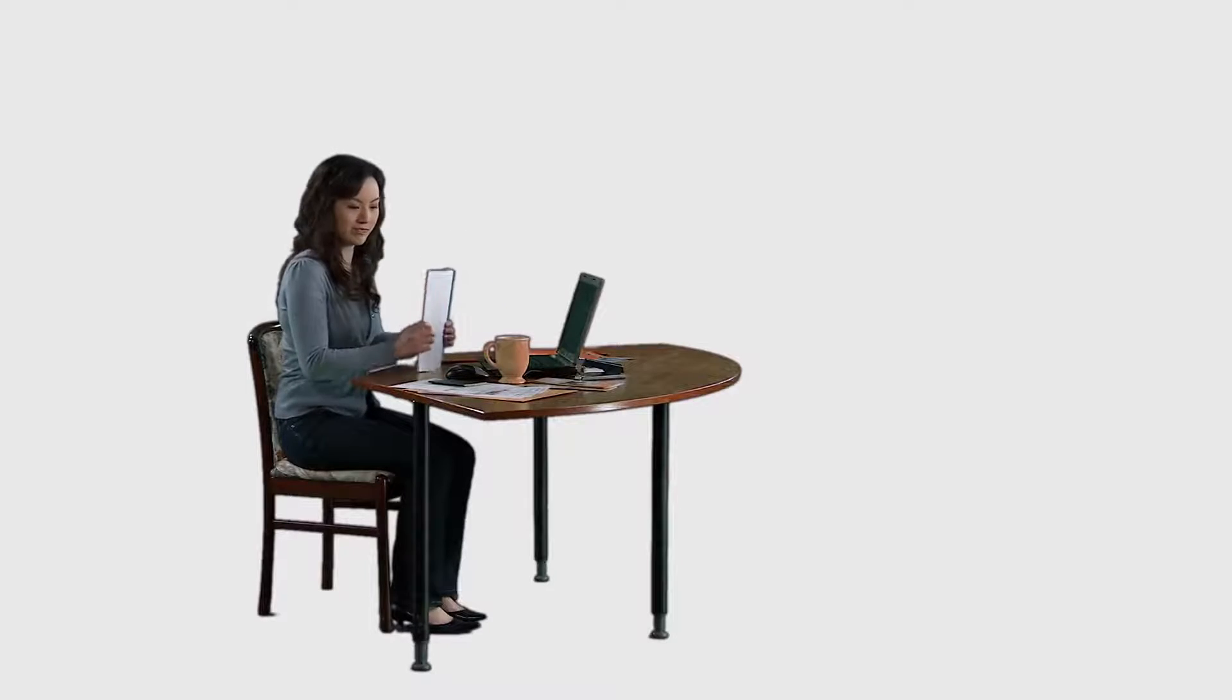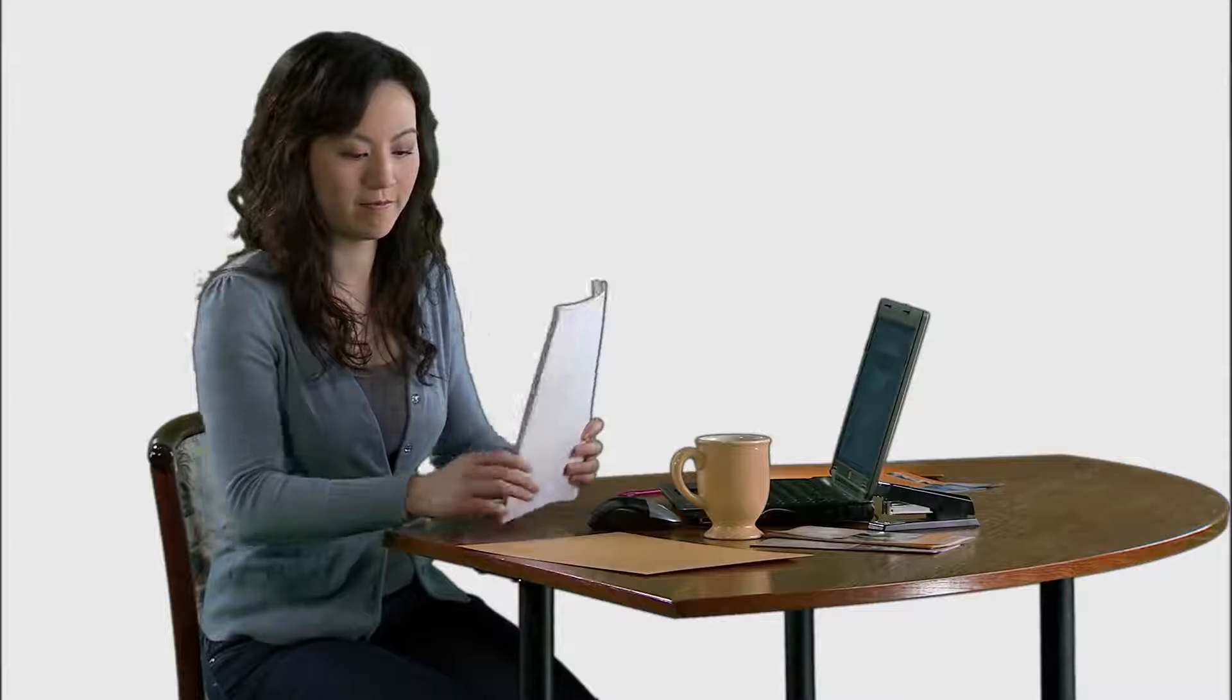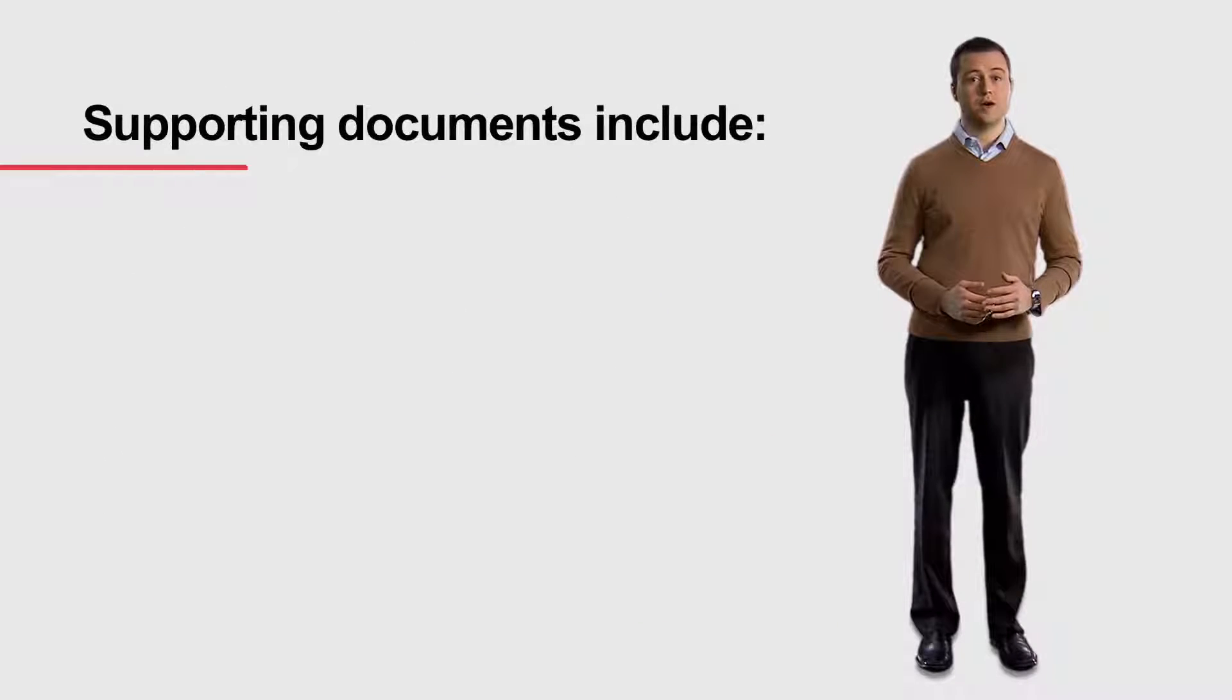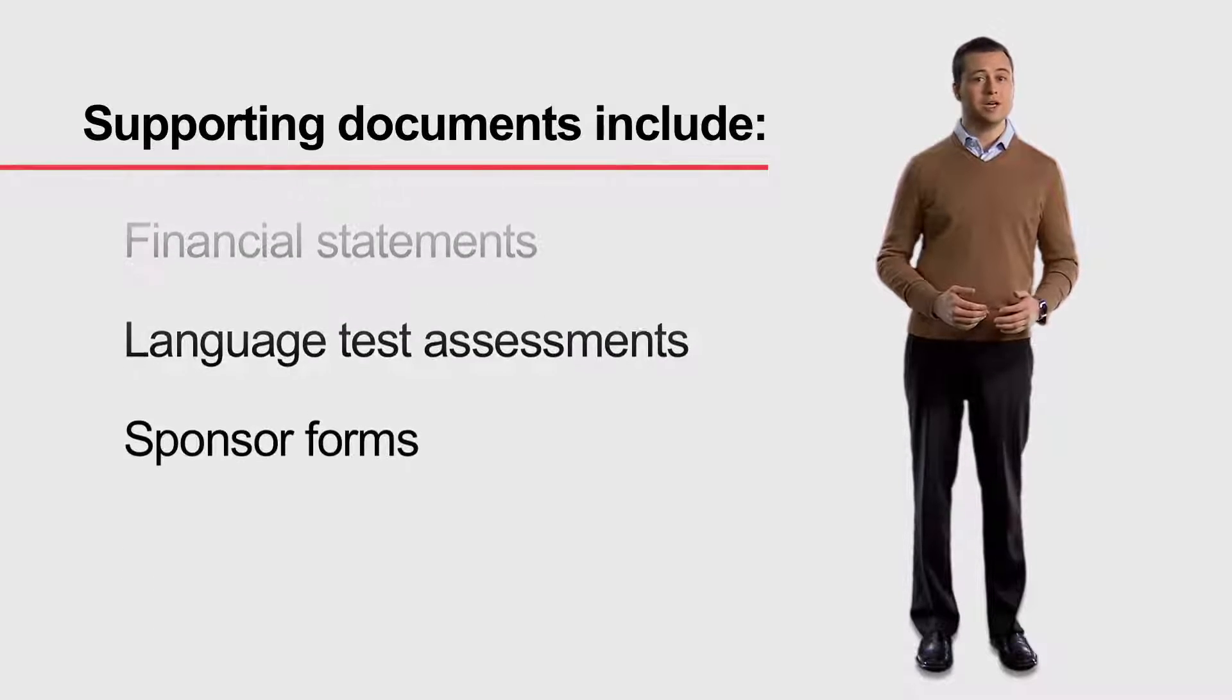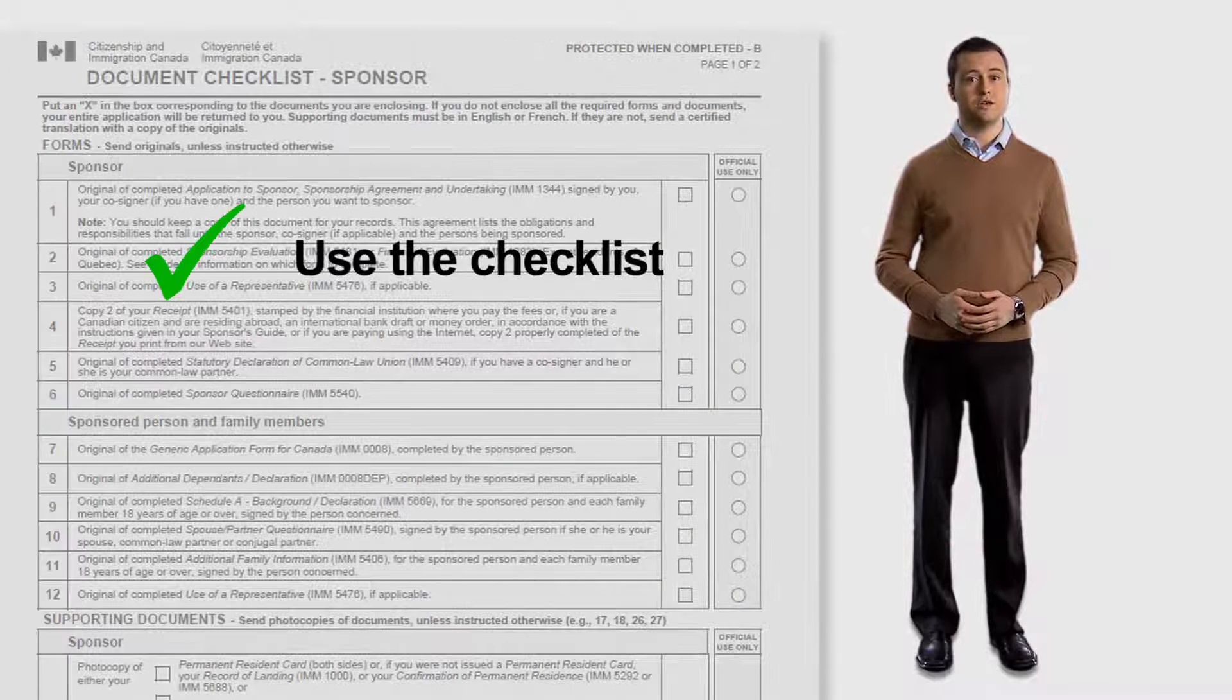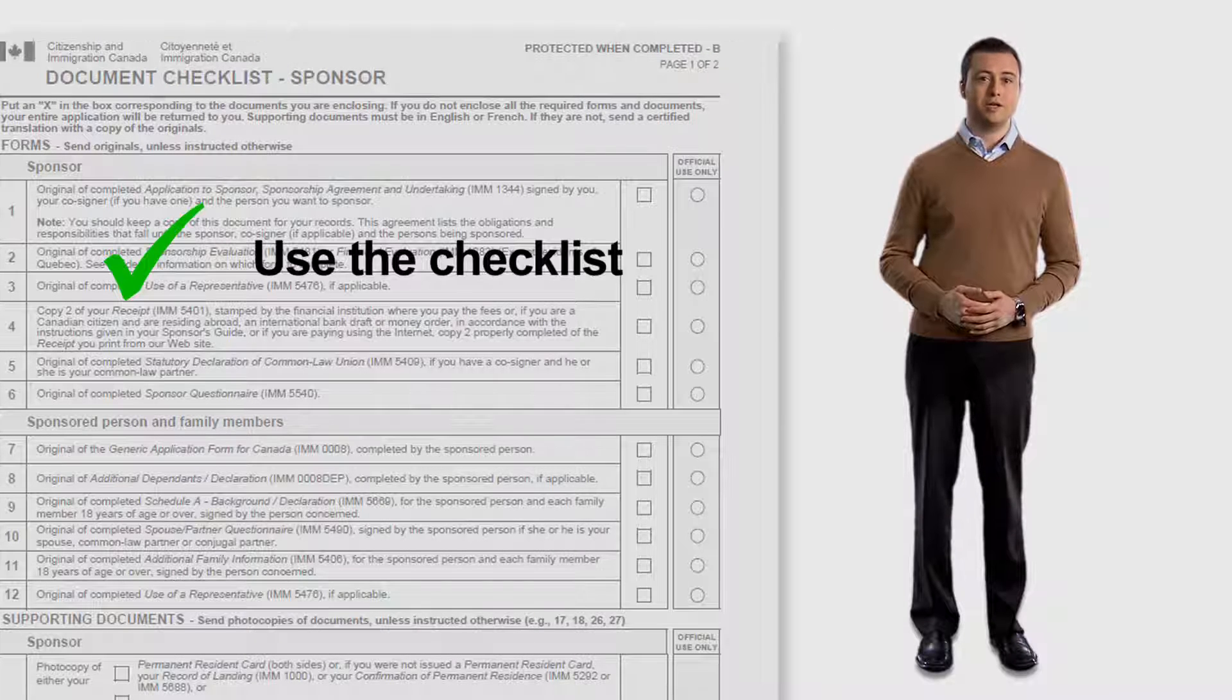When you are ready to submit your application, remember to include all supporting documents. This means photos, fee receipts and supplementary forms. Supporting documents include items such as passports, birth certificates, medical information, financial statements, language test assessments or sponsor forms. Go through the checklist to see what, if any, supporting documents are needed and include them with your application.